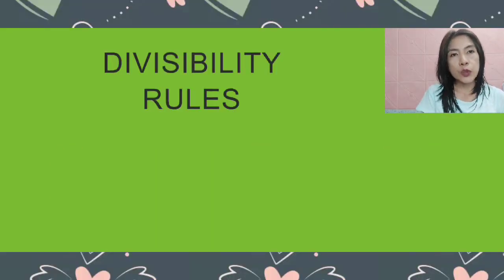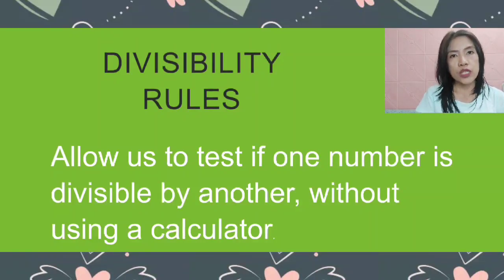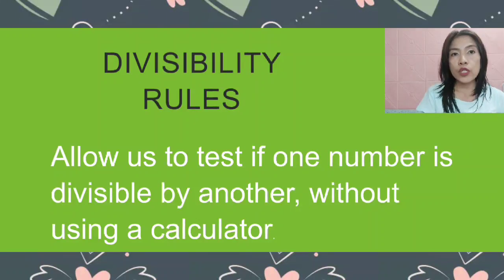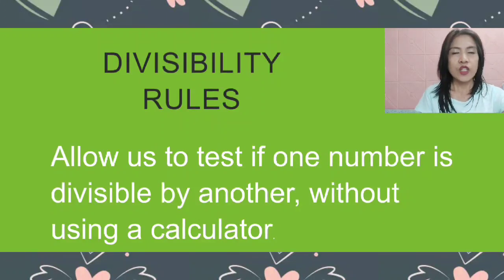Divisibility rules allow us to test if one number is divisible by another without using a calculator. So, without using a calculator, what are we going to do if a number is divisible by such number?